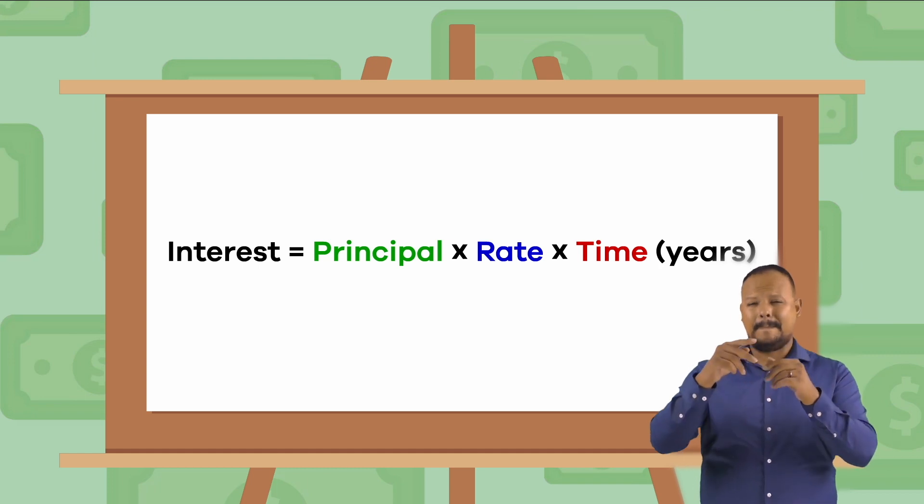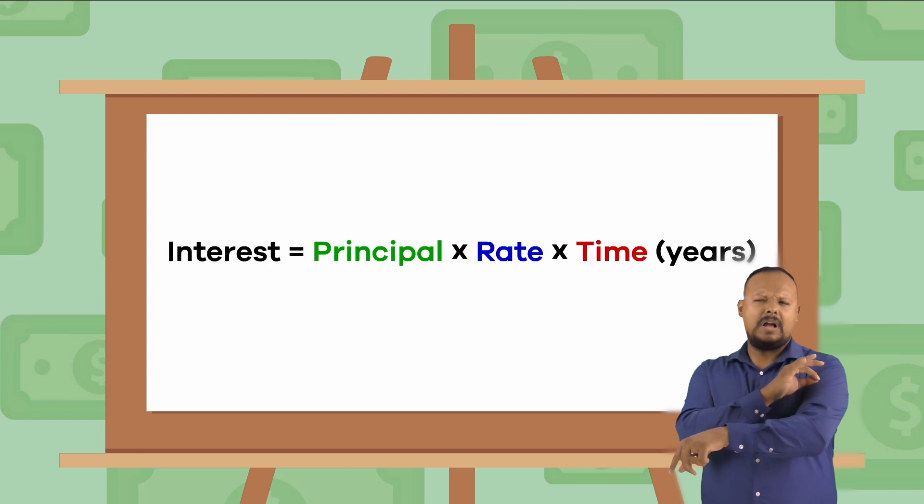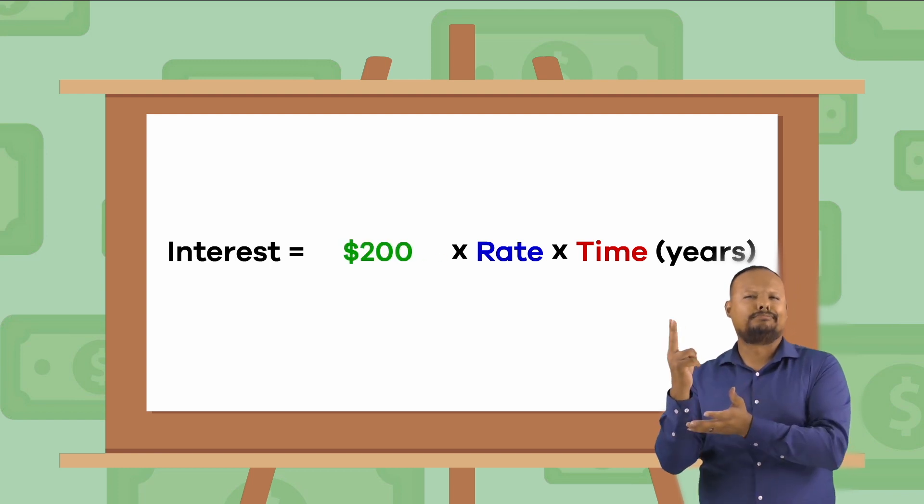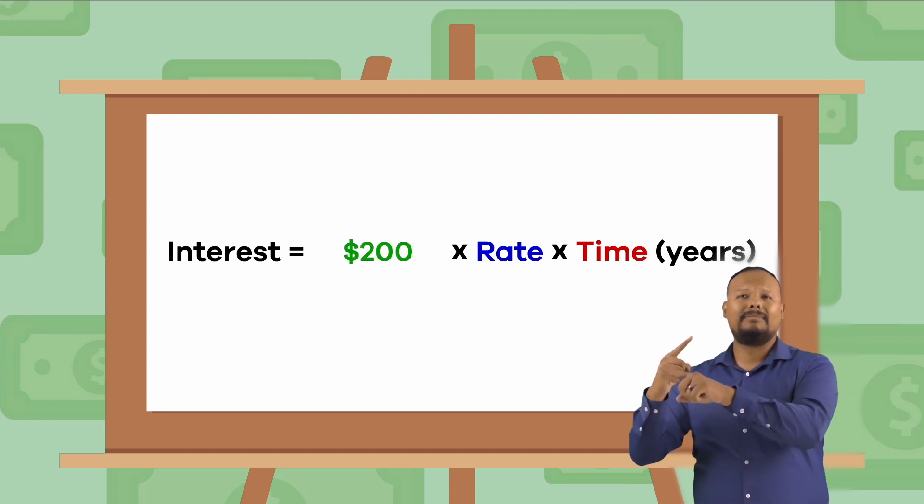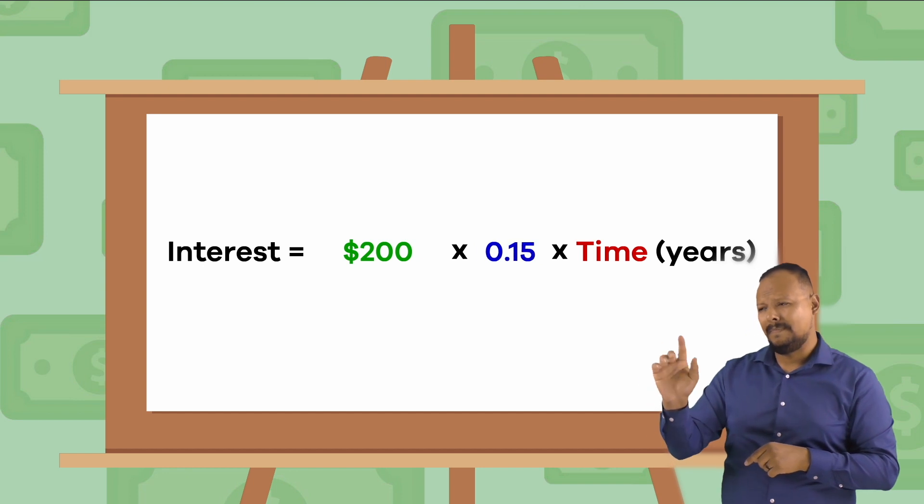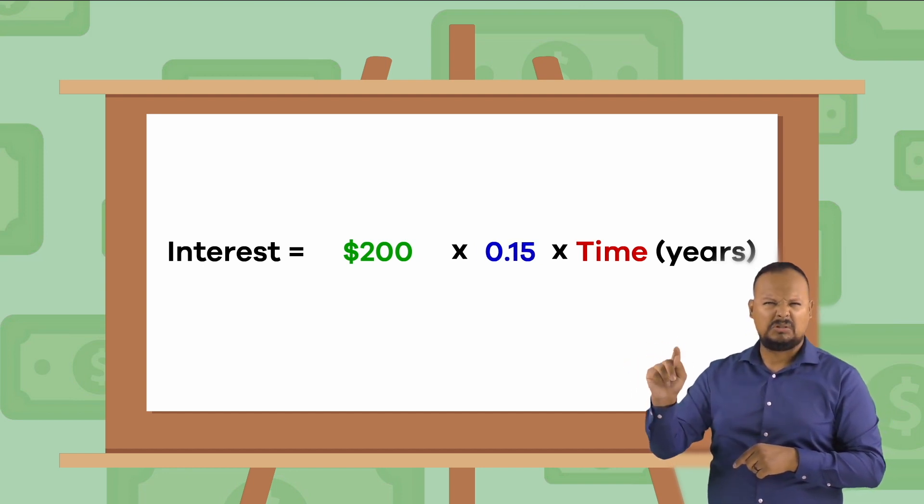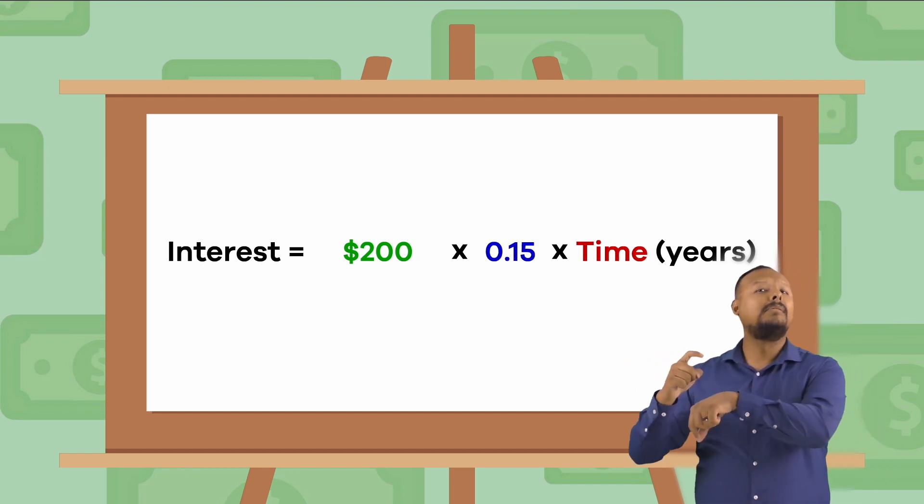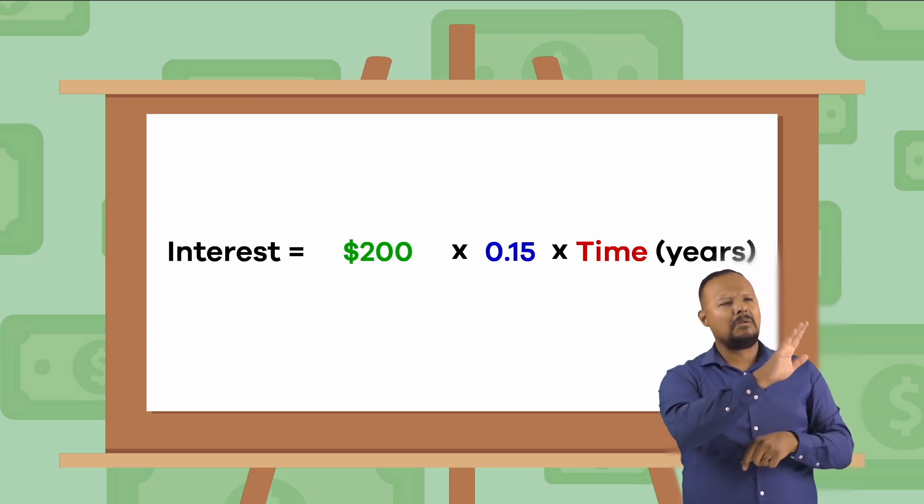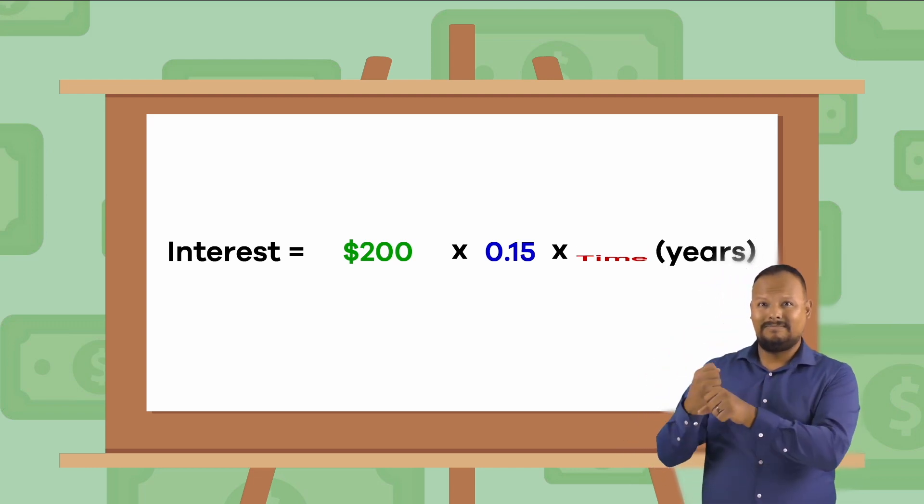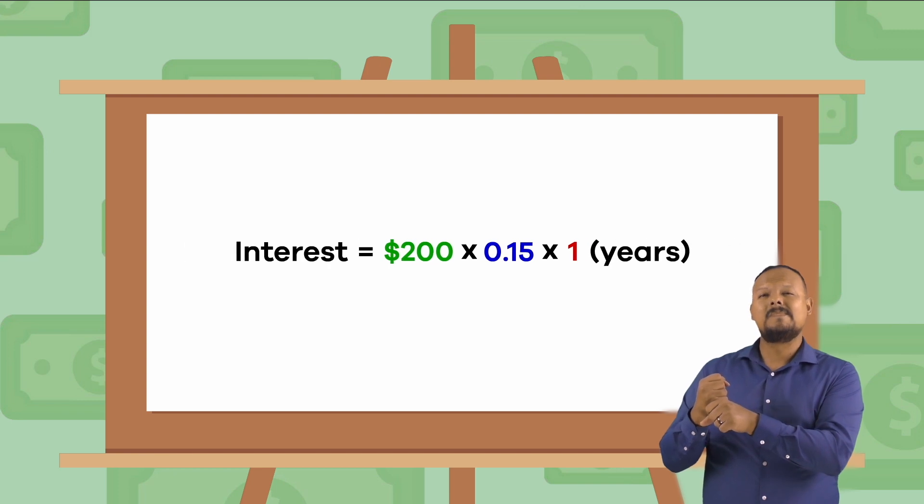First, we know that the principal amount, or the amount that Frankie started with, is $200. Next, we know that the rate equals .15. As for time, we know that the bank calculates their rates yearly. So, that number would be 1 for one year.